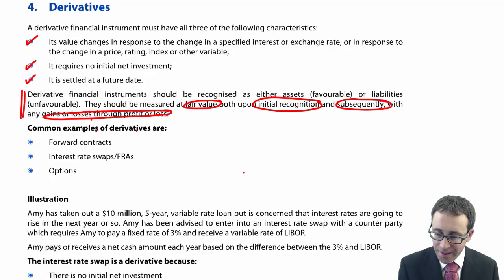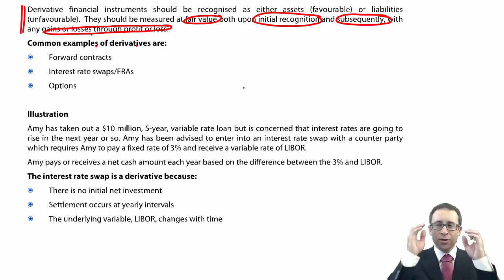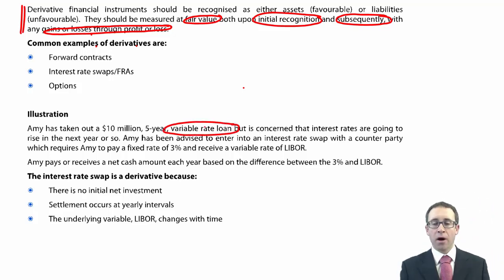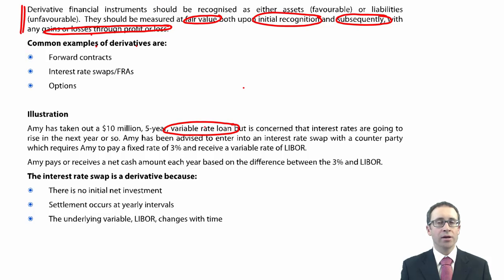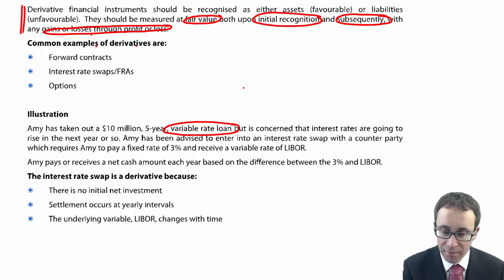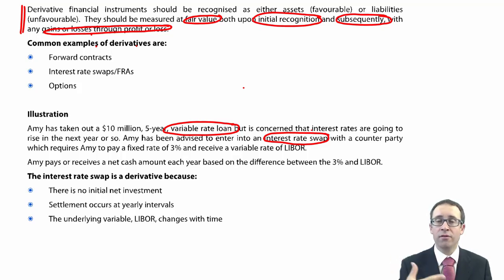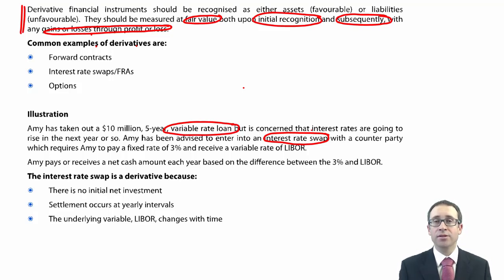The illustration is based around a swap agreement. Amy has taken out a $10 million five-year variable rate loan. So you've borrowed $10 million for five years at a variable rate of interest — if interest rates go up, you're going to pay more money. The risk is that interest rates go up and you pay more interest into the future. So you have been advised to enter into an interest rate swap, where you find a counterparty — somebody who has the opposite concern. We're fearful of rate rises; maybe they're fearful of a rate fall.